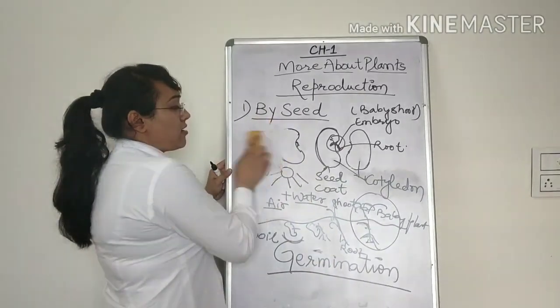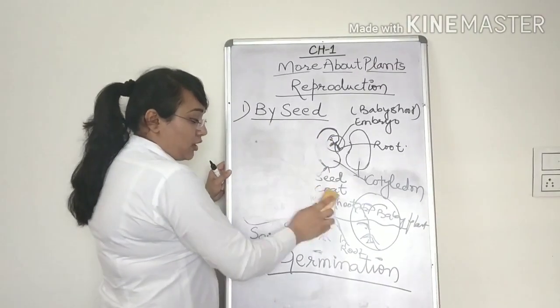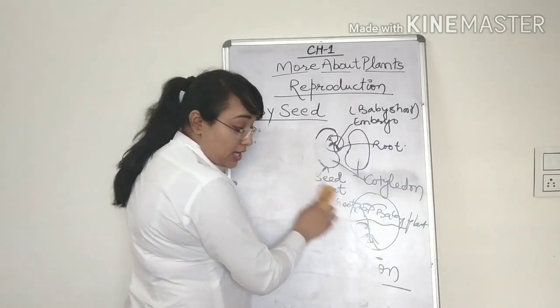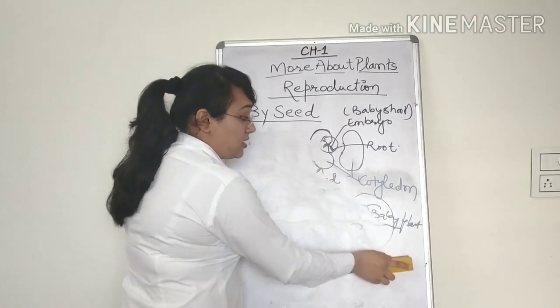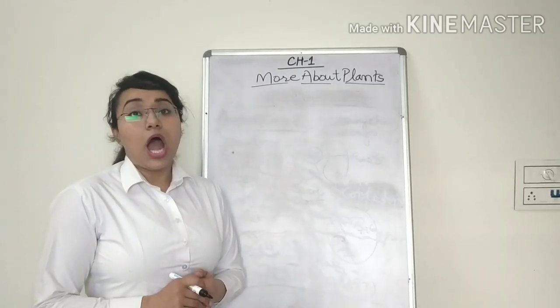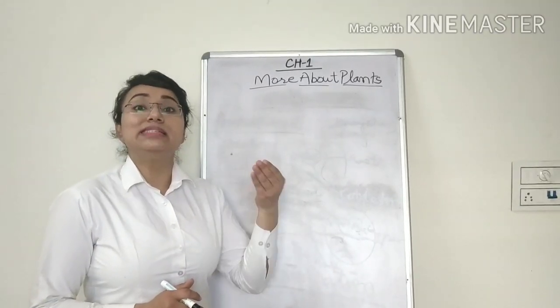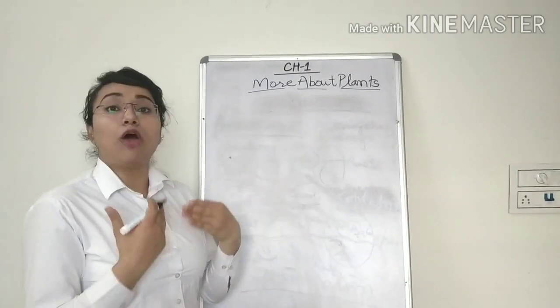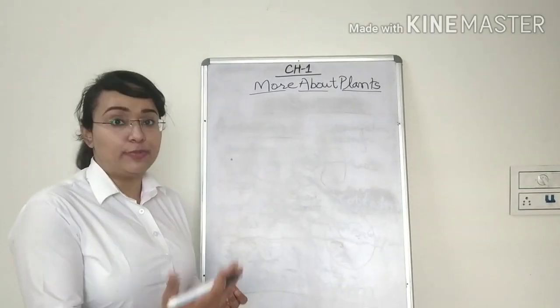Now there are many plants that are grown by using the seeds. For example, avocado, oranges and many more. So we have studied how reproduction can happen using seed. Now we will study the definition like how to write or define reproduction.